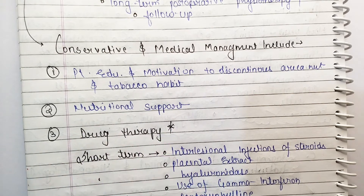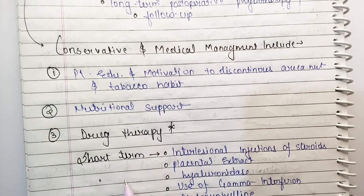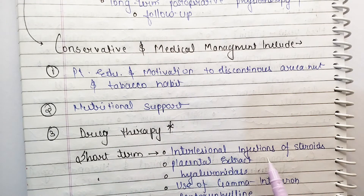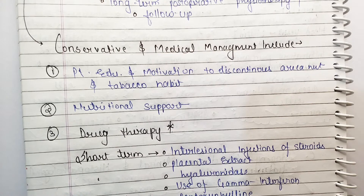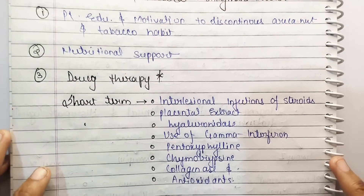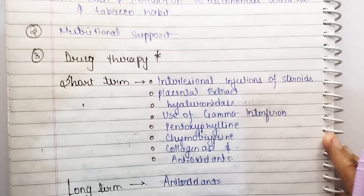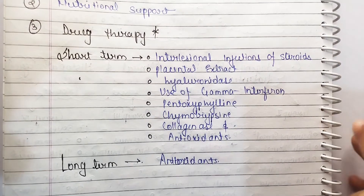You also have to give nutritional support. In short-term drug therapy, you give intralesional injections of steroids, placental extract, hyaluronidase, and use of gamma interferon, pentoxifylline, chymotrypsin, collagenase, and antioxidants. For the long-term period, you have to give antioxidants to the patient.